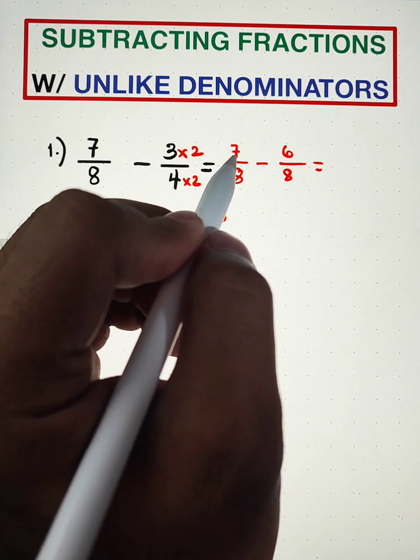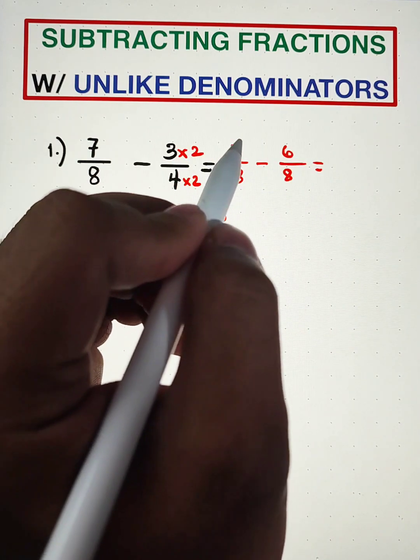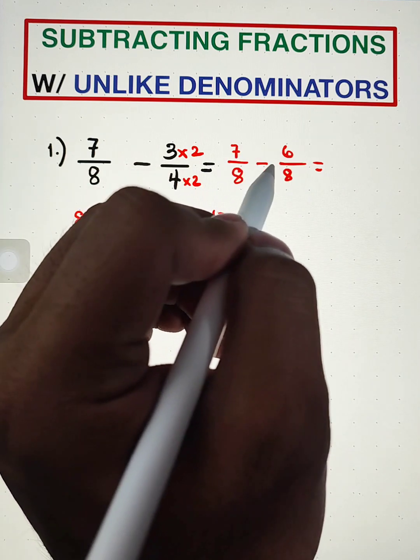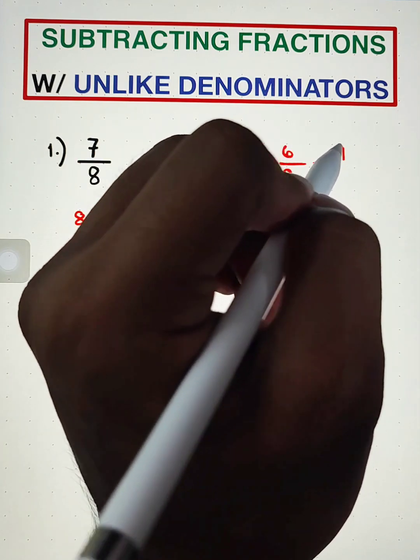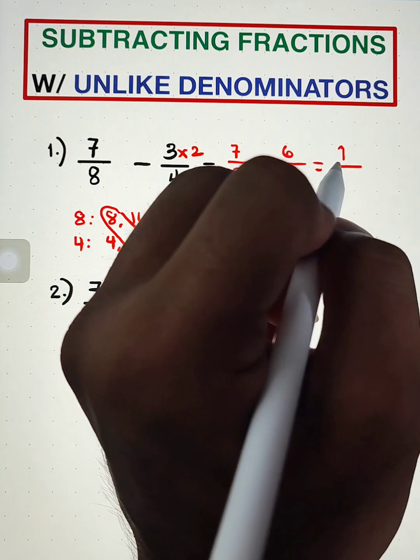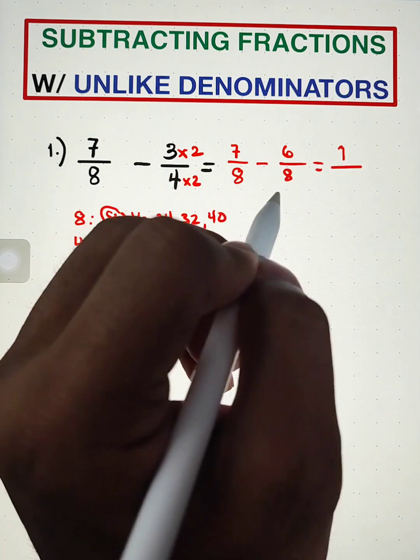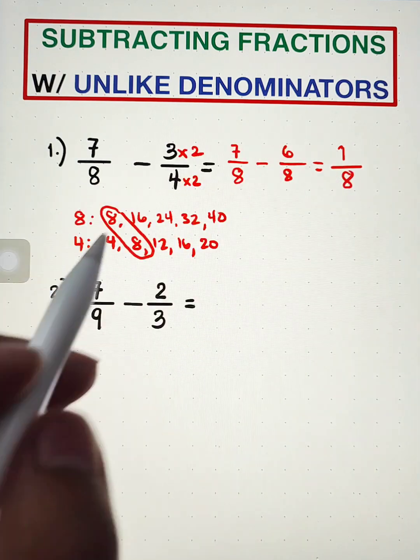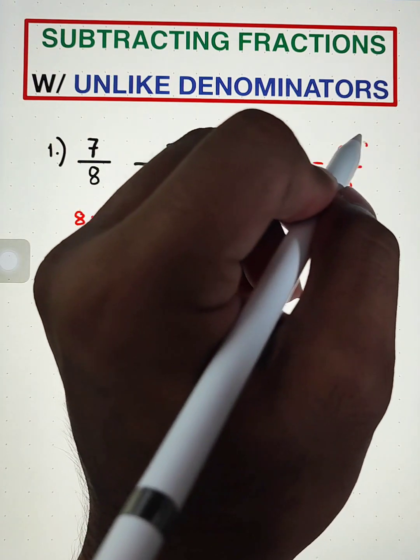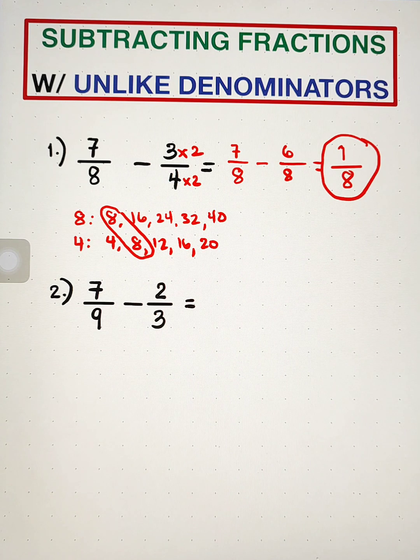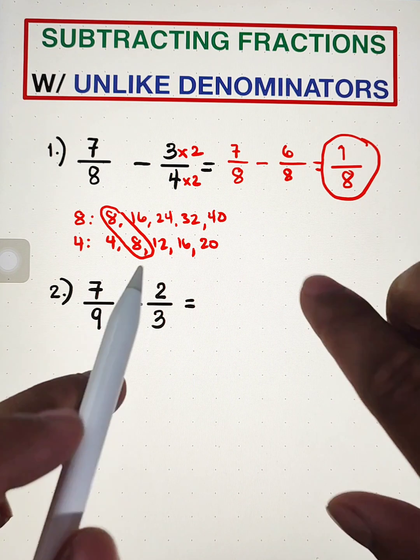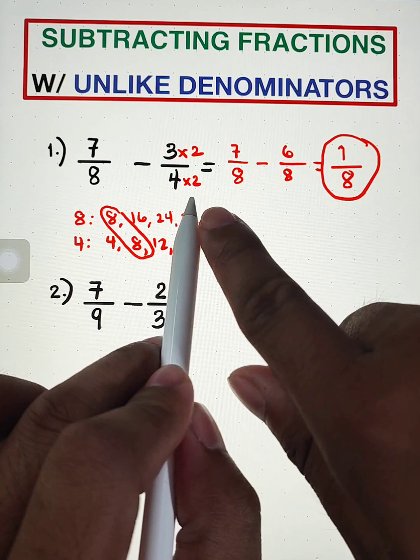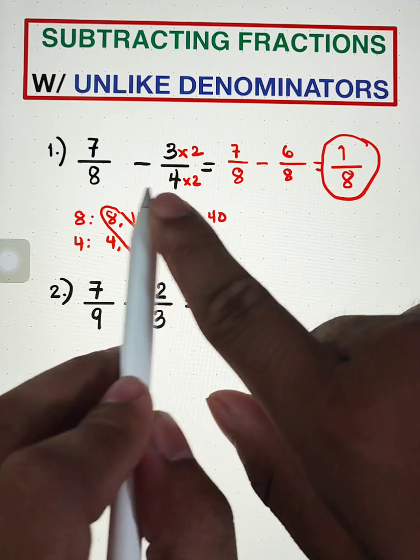And lastly, what we need to do is to subtract the numerators. 7 minus 6 is 1. And since we have a like denominator of 8, all we need to do is to copy the denominator. And as you can see, the answer is 1 over 8. And that's our first method. We think of a multiplier to make our denominators the same.